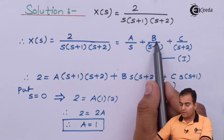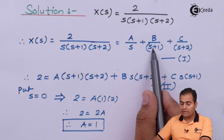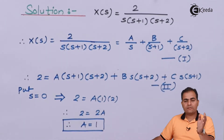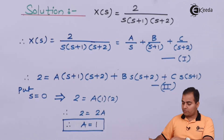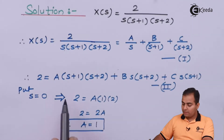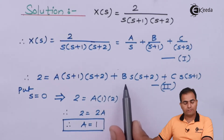Now I am going to calculate the value of B. In the denominator of B we have S plus 1. So simply equate S plus 1 equal to 0 — what you get is S equal to minus 1. So substitute S equal to minus 1 in equation number 2 to find variable B.